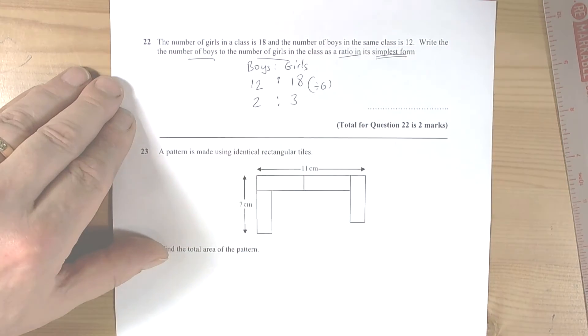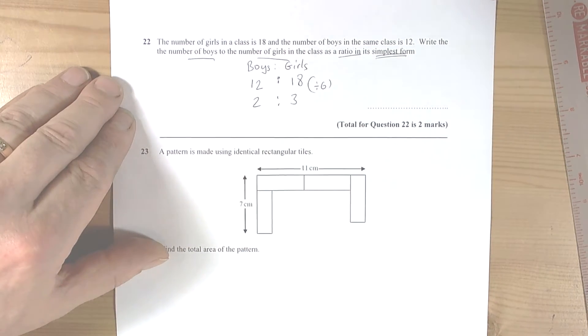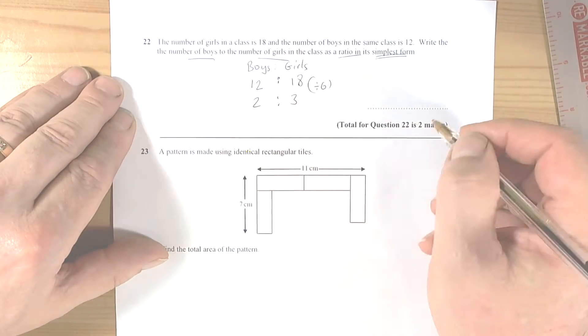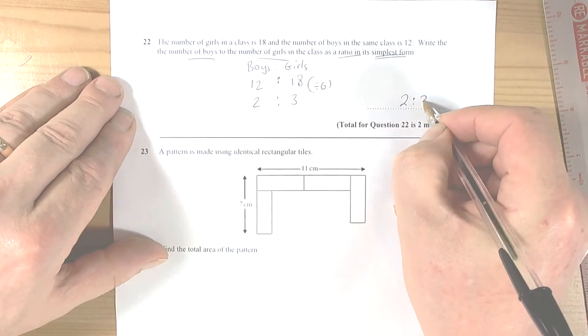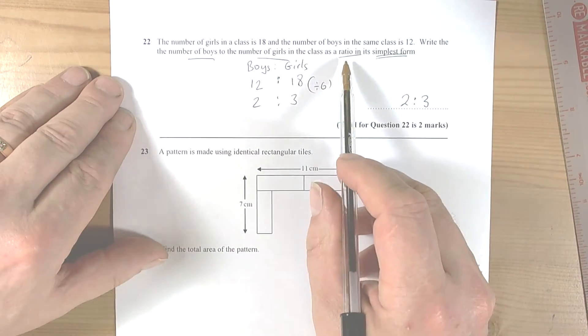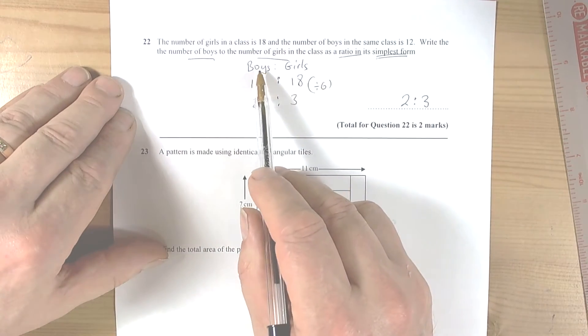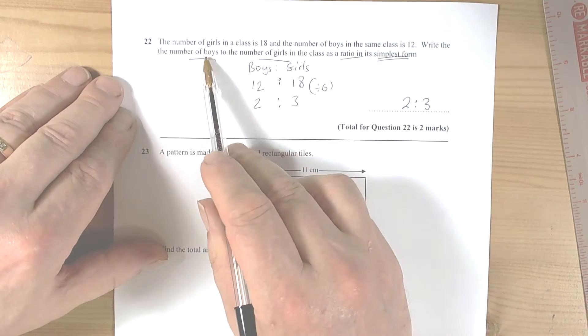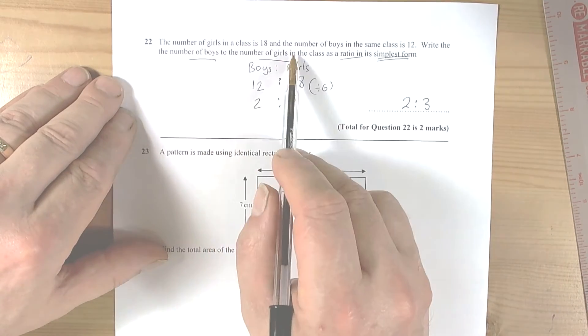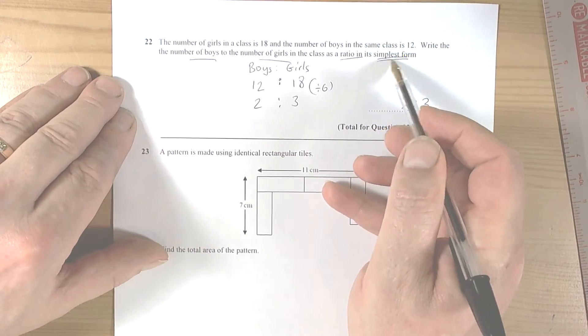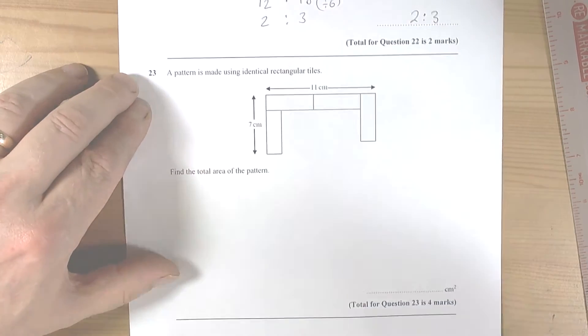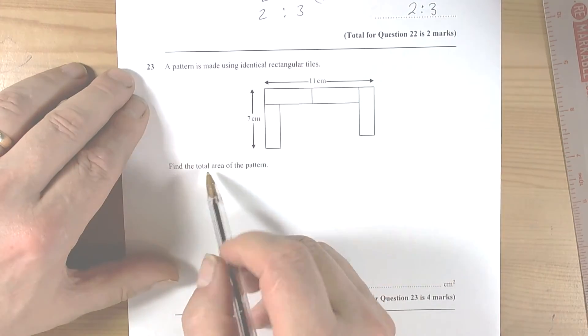So we check those two final numbers to make sure there's no common factors apart from one, and there isn't, so the final answer will be two to three. So ratio guess, best approach: write the headings, write the numbers in that you know, make sure the headings are in the same order as the words of the question, and then look for simplest form all the time by finding common factors.